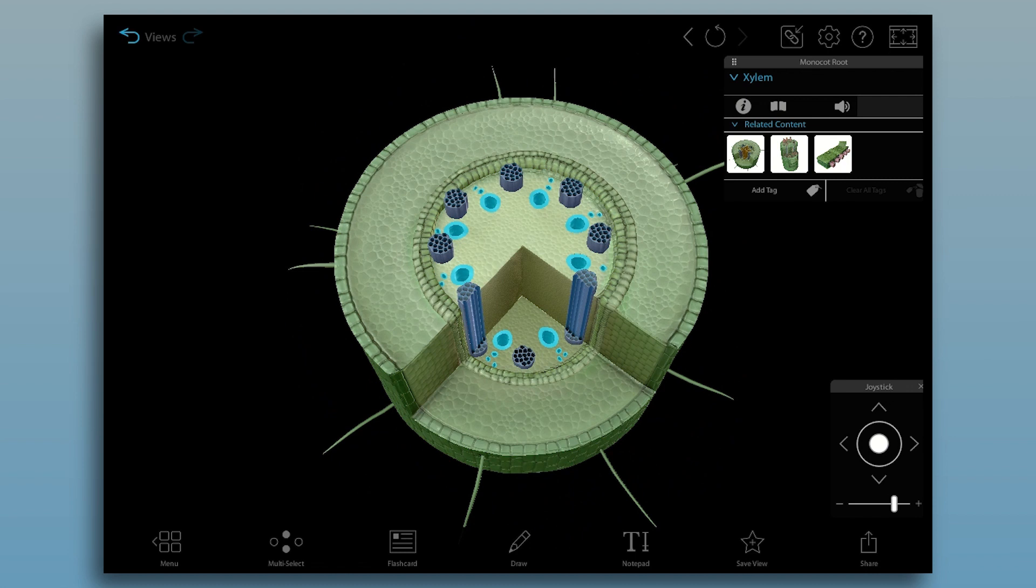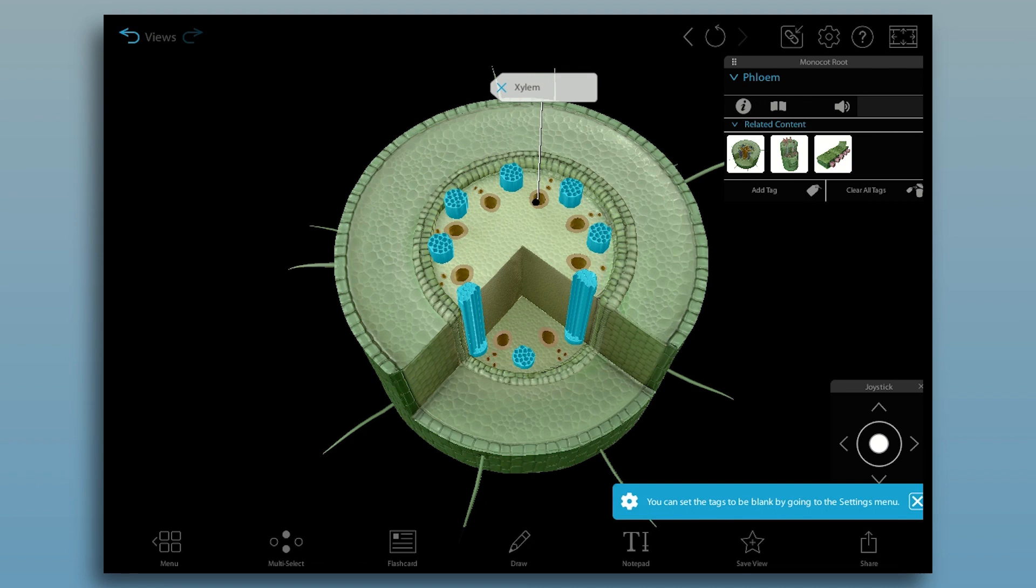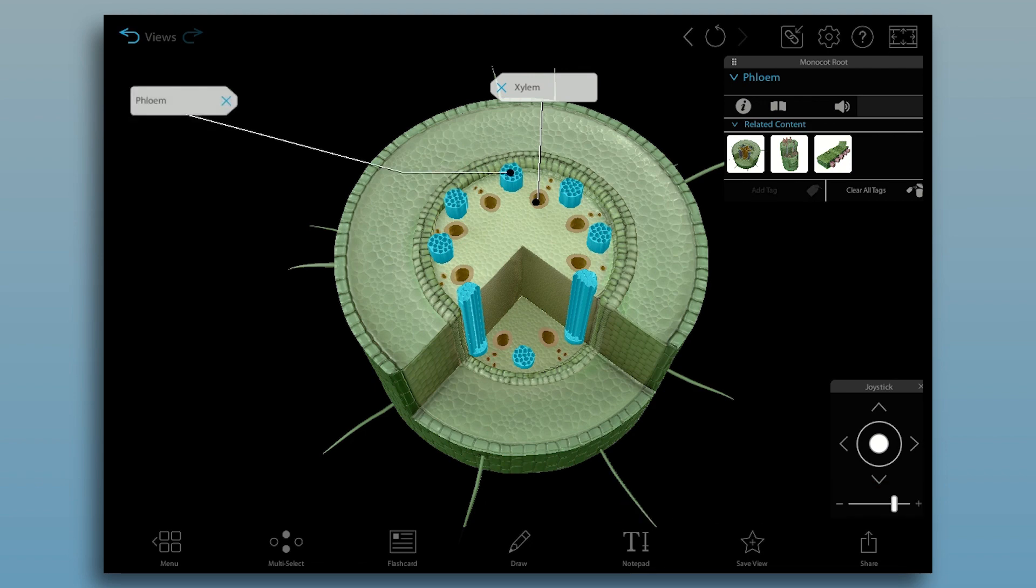The xylem carries water and dissolved minerals upward from the root to the stem and leaves. And the phloem carries dissolved sugars and organic compounds down from the leaves to the stem and roots.